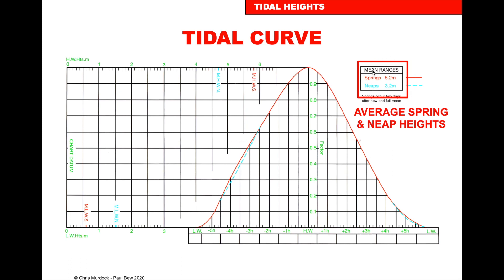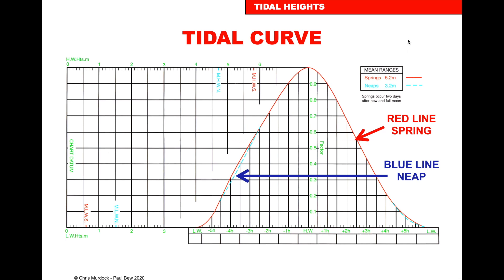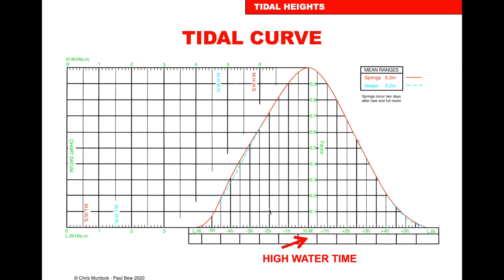On the tidal curve, the top left shows mean ranges for that harbour — for example springs 5.2, neaps 3.2. The red line is used for spring tides, the blue dotted line for neap tides, and if you're halfway between you interpolate between them. The high water time for that day is entered in the centre box, and the boxes to either side show each hour before and after high water. Each hour is divided into 6 increments, each representing 10 minutes.